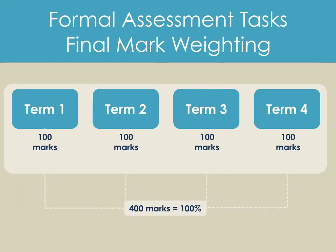Together, all of these make up your final year mark — your progression and promotion mark — which includes 100 marks from each of term 1, term 2, term 3 and term 4. Those 400 marks make up the 100% for your final weighting for progression and promotion, and that percentage is then converted to a code.